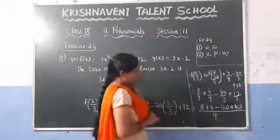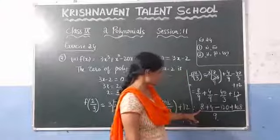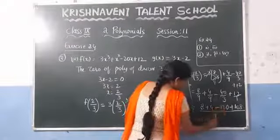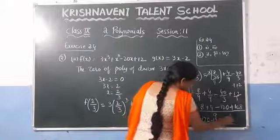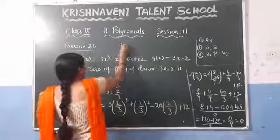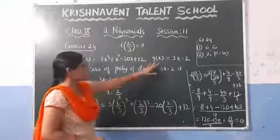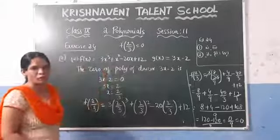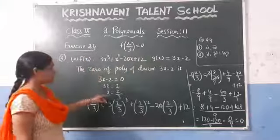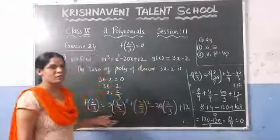Adding the values: 8 plus 4 is 12, plus 108 gives 120. Minus 120. So we get 120 minus 120 over 9, which is 0 by 9, giving 0. We got f of 2 by 3 equals 0. Since the remainder is 0, we can say that g of x is a factor of f of x. Find the zero of the divisor, get the x value, substitute into the dividend — if you get 0, it is a factor.